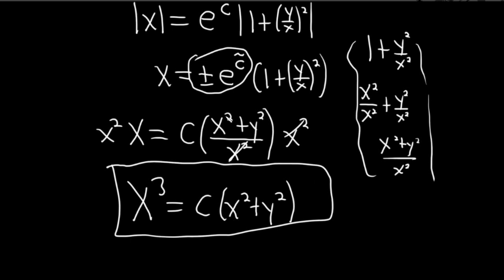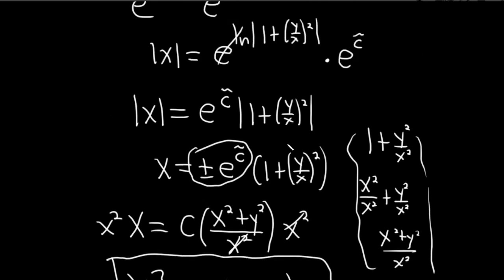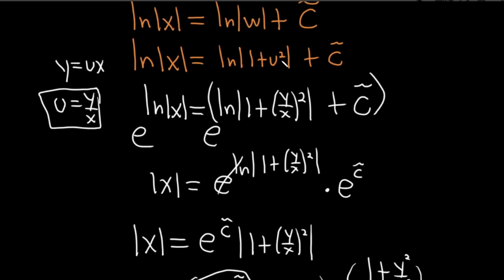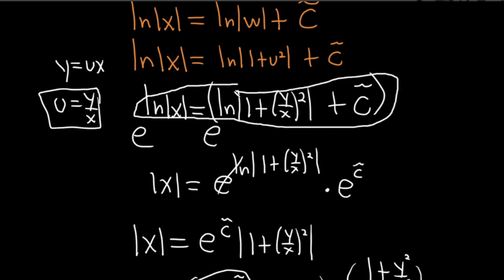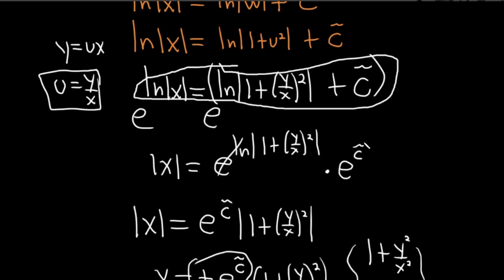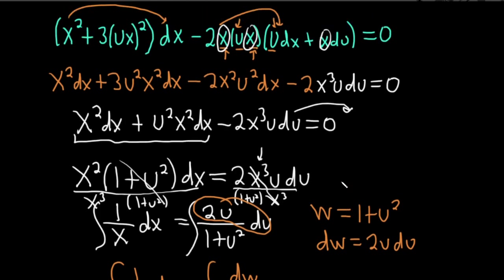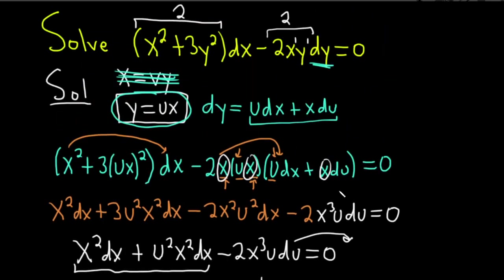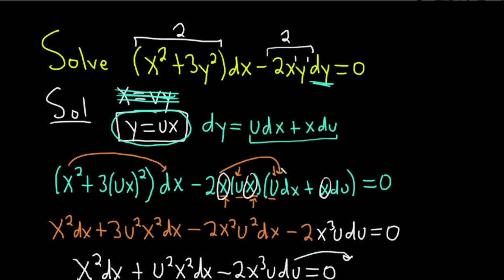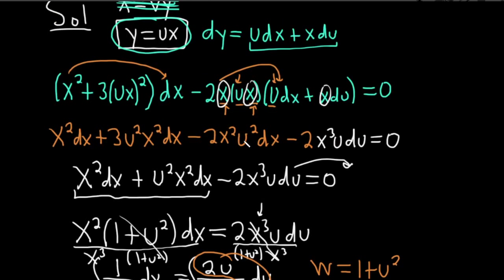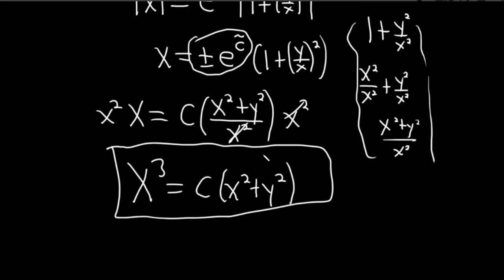That's the solution to the differential equation — x cubed equals c times (x squared plus y squared), which is much prettier than our intermediate steps. Note that the term 'homogeneous' here is different from its use in linear differential equations of higher order with constant coefficients. Hopefully this video has been helpful. Good luck.